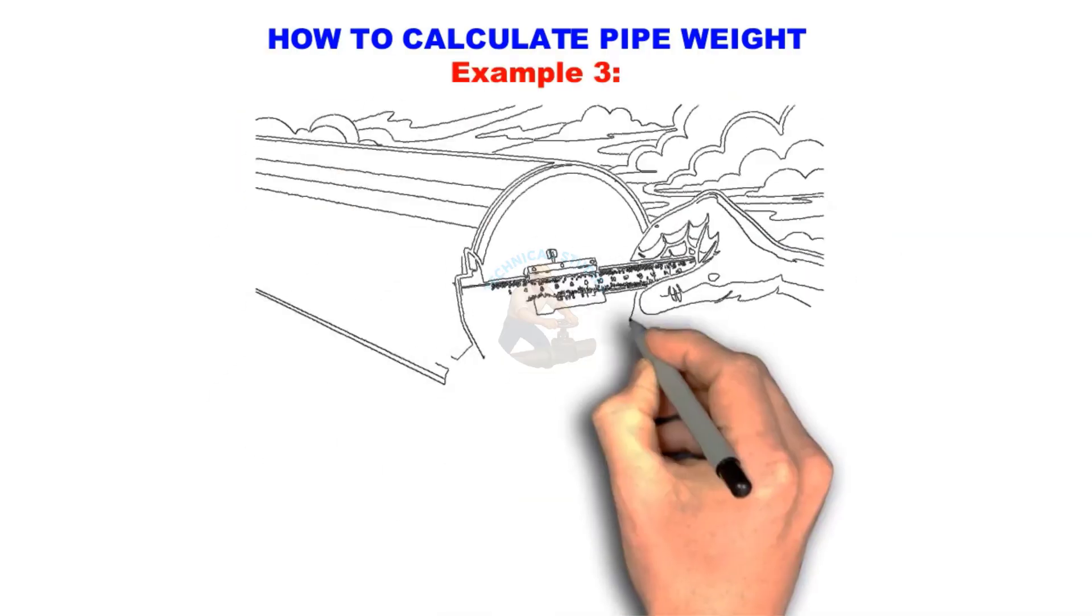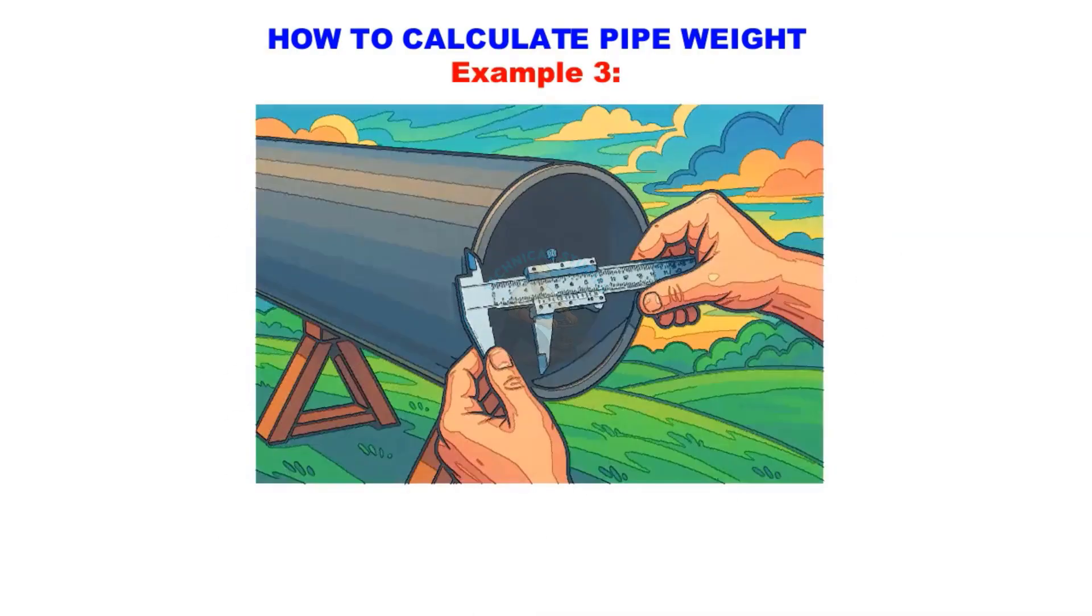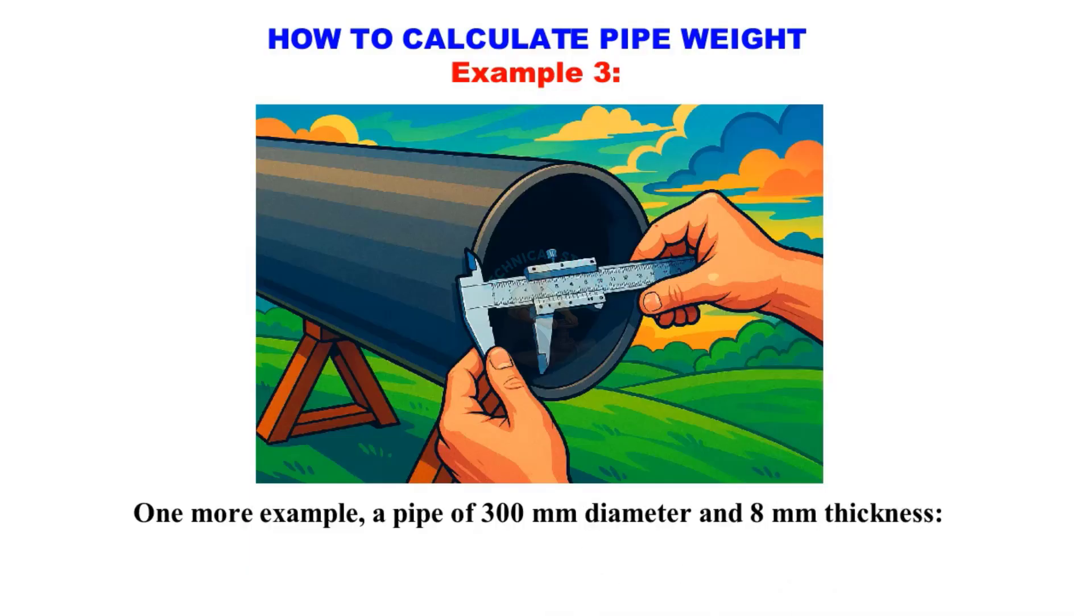Example 3. One more example, a pipe of 300 millimeters diameter and 8 millimeters thickness. Weight per meter equals 0.02466 times 300 minus 8 times 8 is equal to 57.6 kilogram per meter.